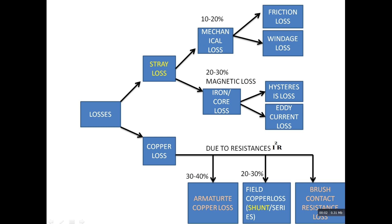Copper loss is due to resistances. It can be from armature resistance, field resistance, or brush contact resistances. Field copper loss is 20 to 30 percent of full load copper losses and can be shunt or series.